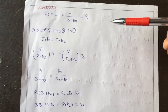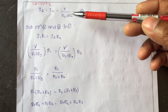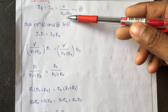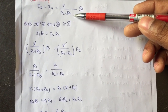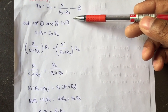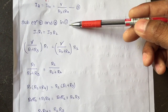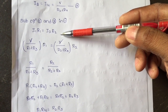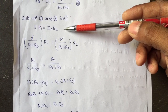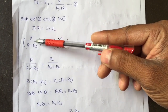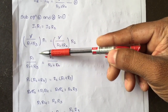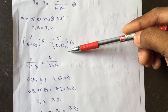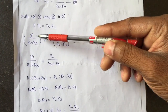We can write I2 = I4 = V divided by (R2 + R4). Now substituting Equations 2 and 3 into Equation 1, where I1 = V/(R1 + R3) and I2 = V/(R2 + R4): substituting gives R1/(R1 + R3) = R2/(R2 + R4), and V cancels from both sides.